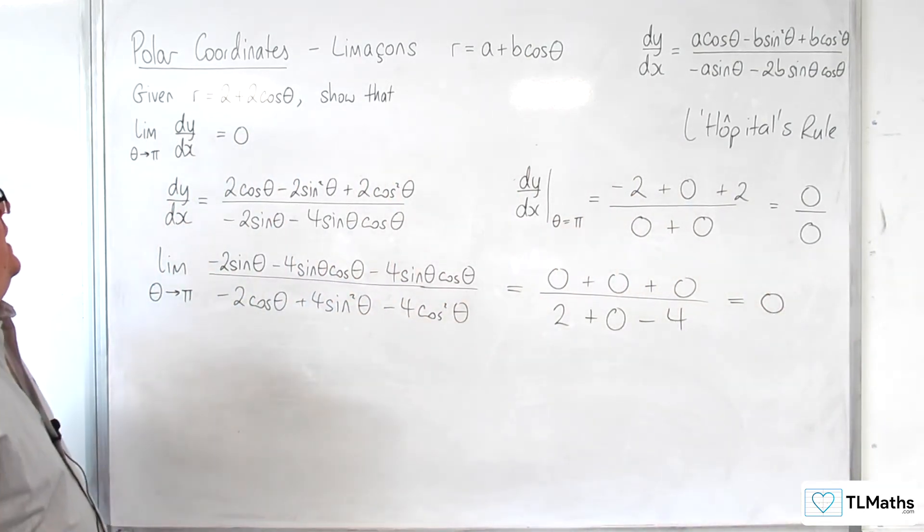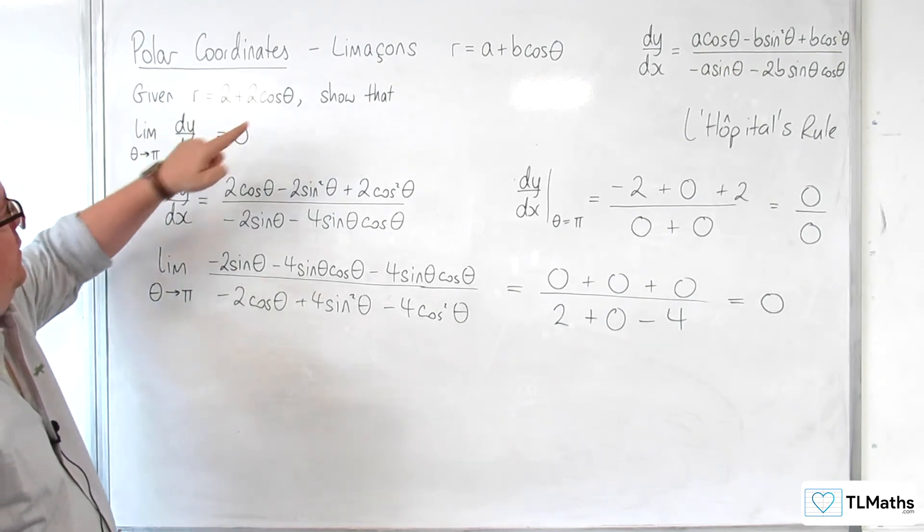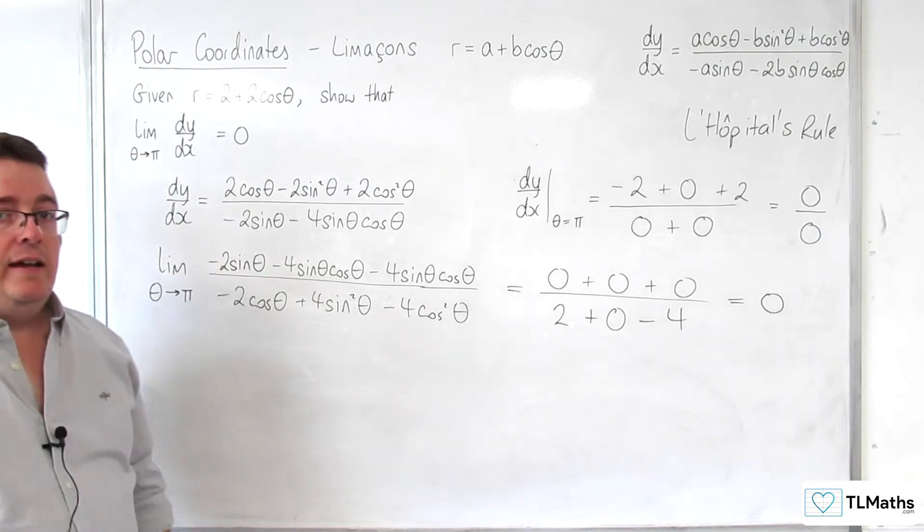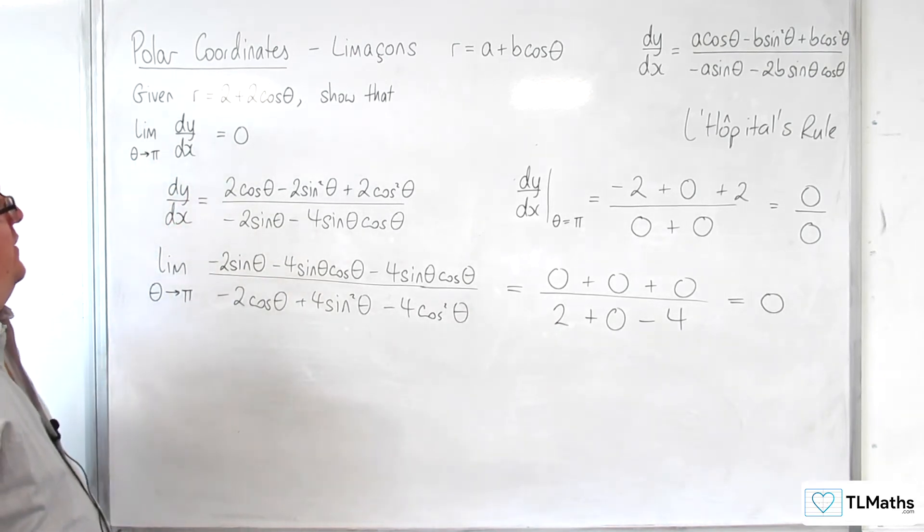So we can see that as this curve, as theta tends towards pi, dy by dx tends to 0.